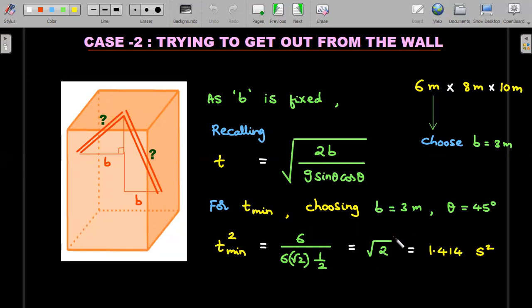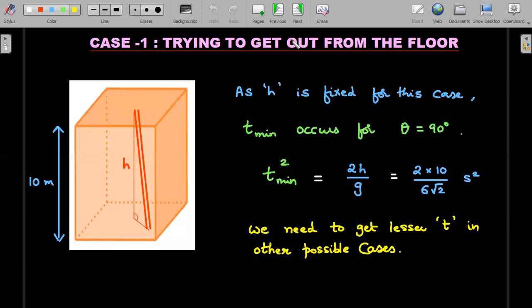You would end up getting t_min² is √2. Now compare this t_min² of √2 to the previous t_min², you could see this is actually greater than √2. It's pretty straightforward, because you could write this as √2 in the top and 12 in the bottom. This would be 10/6 times √2. This is 10/6 times √2 and this is √2.